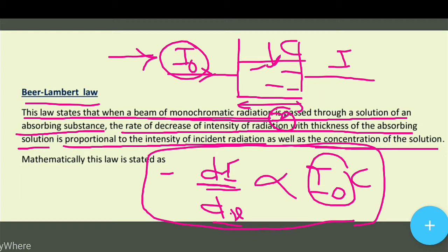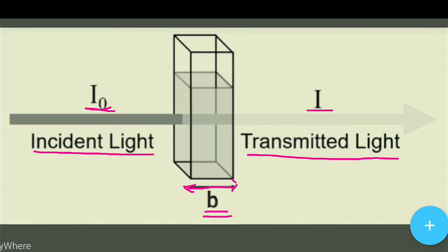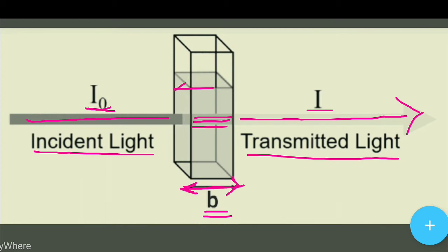Mathematically, this law is stated as: यहाँ पे दिया है — यह है incident light जिसको हम I₀ से denote करते हैं, और यह है transmitted light जिसको हम I से denote करते हैं, और यह है solution का thickness जिसको हम b suppose करेंगे। जब incident light जाएगा solution में तो इसमें से कुछ हिस्सा absorb होगा और remaining transmitted light बाहर निकलेगा।